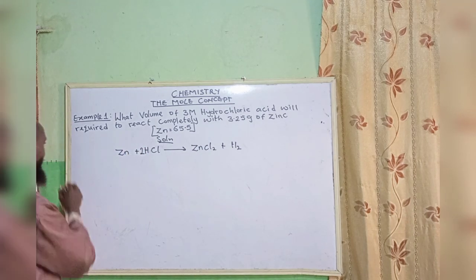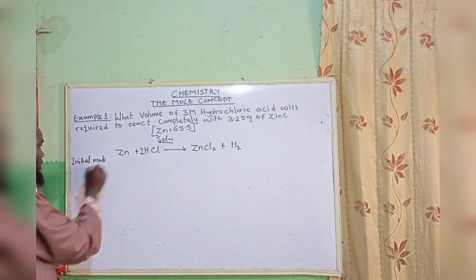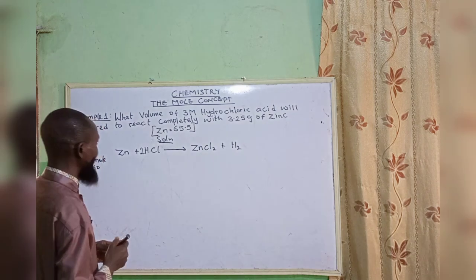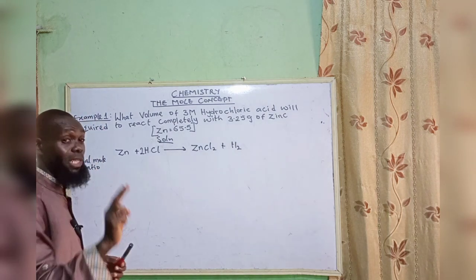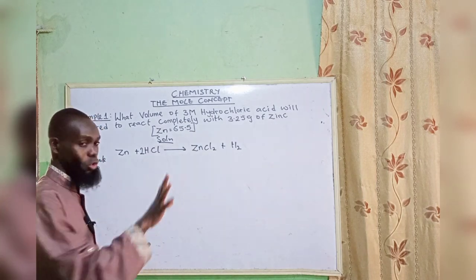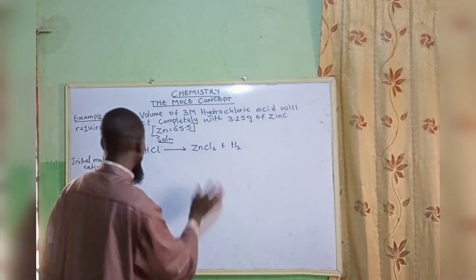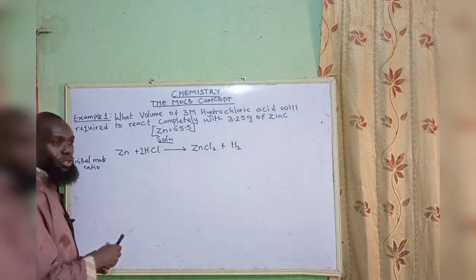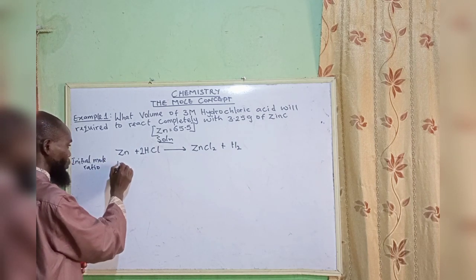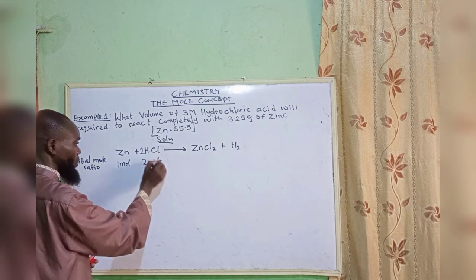The first thing is: what are the initial mole ratios? The initial mole ratio of the two substances we are talking about — zinc and hydrochloric acid. What we need are zinc and hydrochloric acid. The coefficient of zinc here is one mole, while hydrochloric acid is two moles.